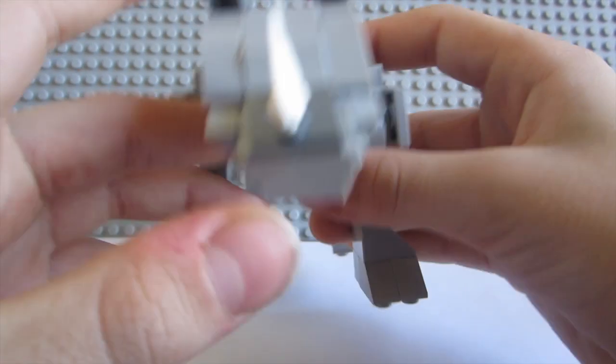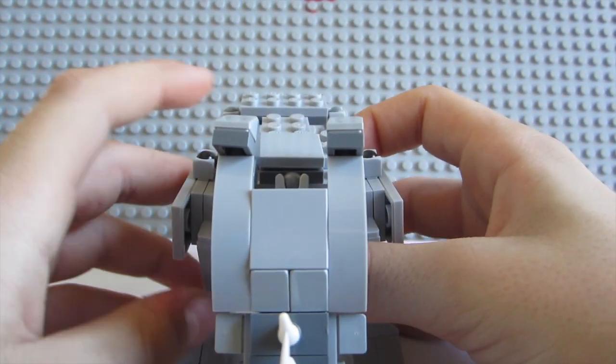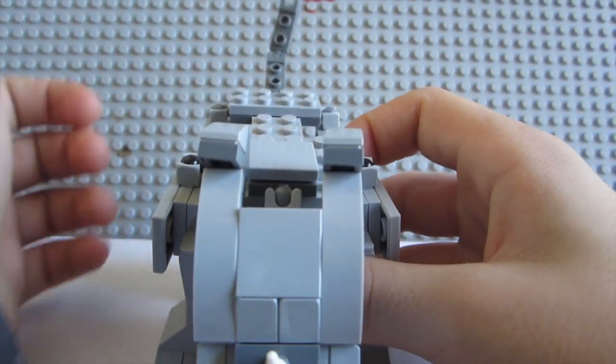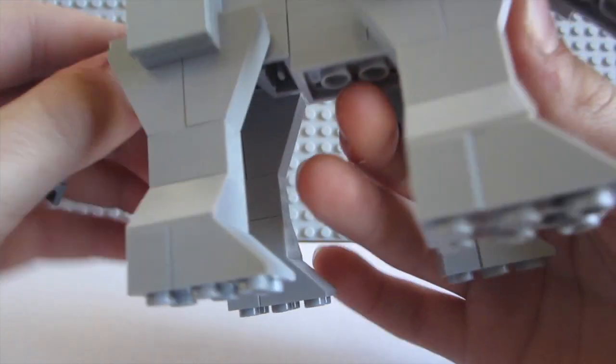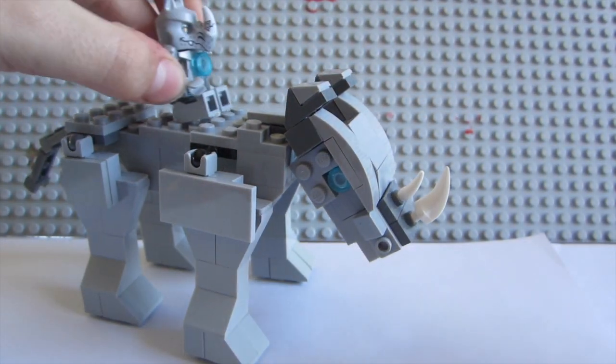The face is constructed, there it is from the front. How menacing is that charging at you. And then you can whip the tail up in the back to give it kind of a fierce mood. So yes that is my Rhino Legend Beast.